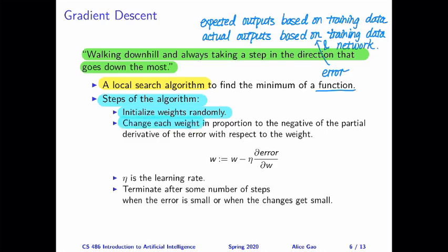So for each training example, we're going to calculate the negative of the partial derivative of the error with respect to that weight. So this is the partial derivative I'm showing you right here. Then we'll take that partial derivative, multiply by eta, which is the learning rate.